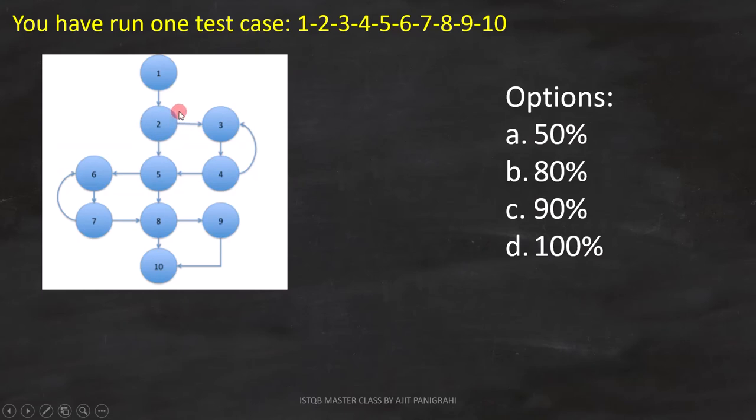For example, bubble number 2, 4, 5, 7, and 8 are the decision bubbles. And as per the question, we will run 1, 2, 3, 4, 5, 6, 7, 8, 9, 10.